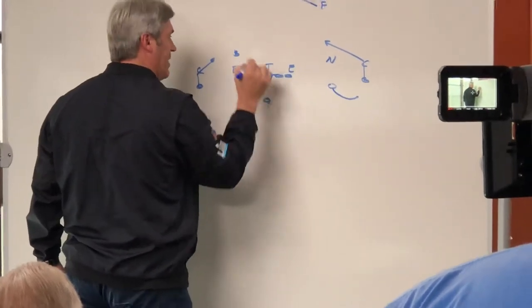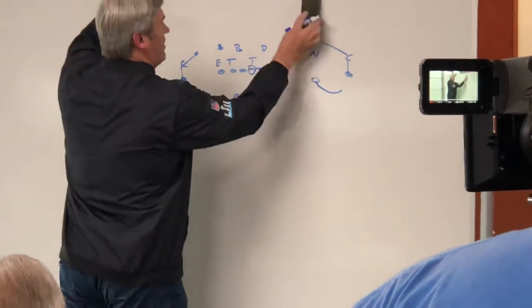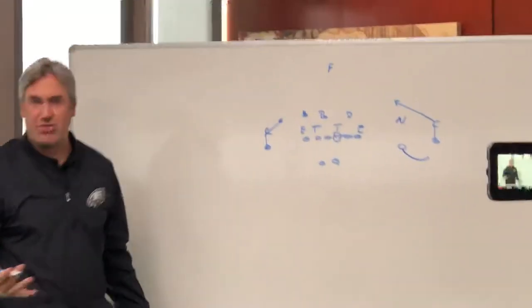Now let's say this safety is all the way down in the box. This safety is now in the middle of the field. And it becomes a true seven-man box.